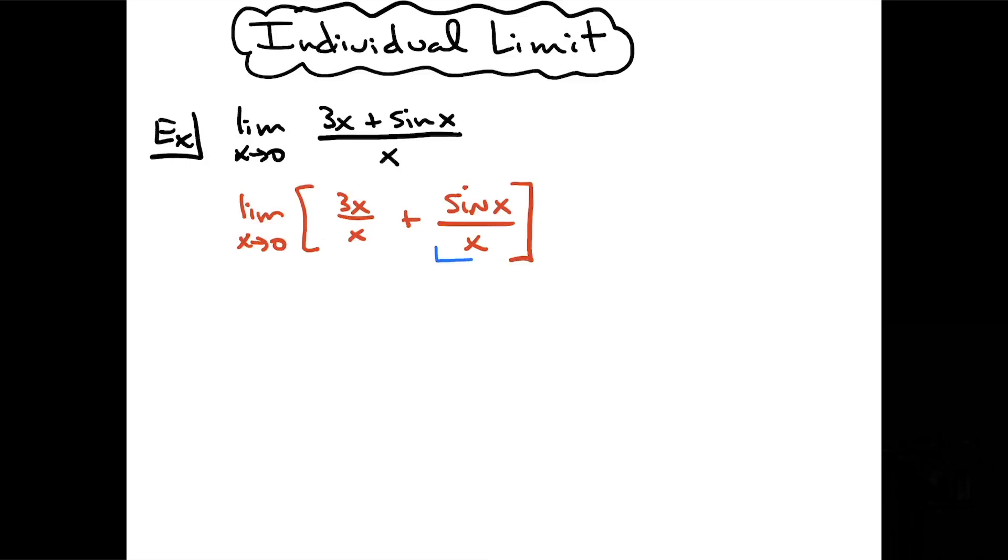There's sine x over x, we know that's going to be equal to one. Over here with the 3x over x I'm going to be able to take those x's and cross them out because anything over itself is always one.